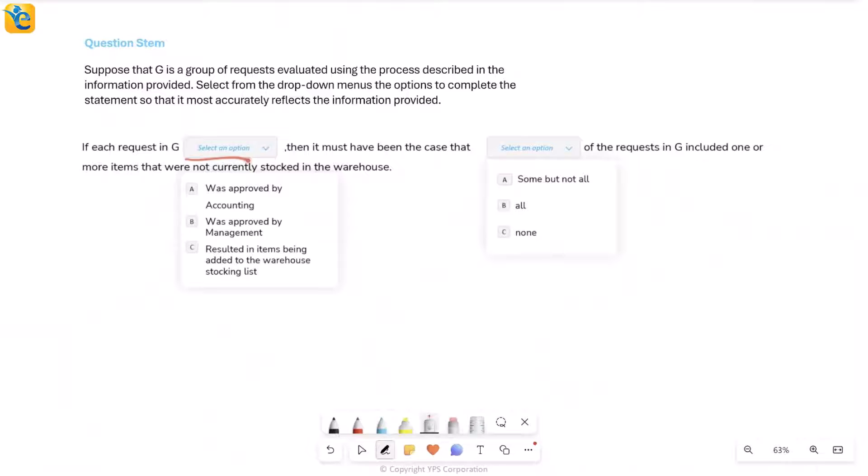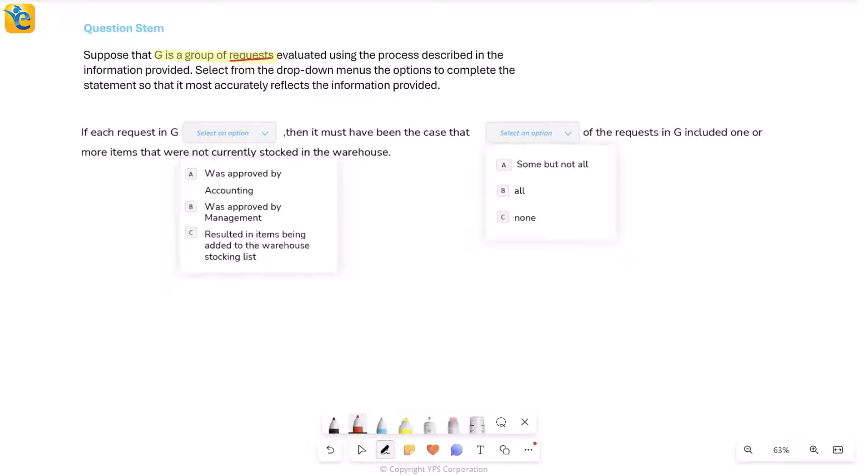Here is a question with two different blanks in a single statement. We will have to select which choice makes sense. Let's read the question stem. The stem says that G is a group of requests—it's not one request, it's a lot of requests that came from different retailers. G is a group which is evaluated using the process we just learned, and for this group you have to select which choices make sense. So we really got nothing much except that G represents a group of requests, not a single request.